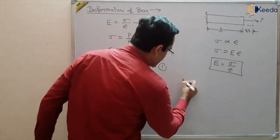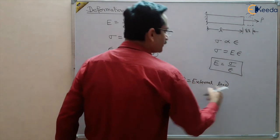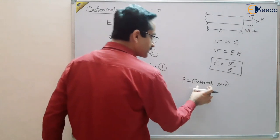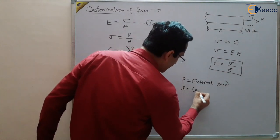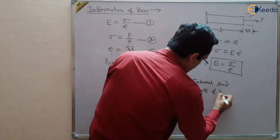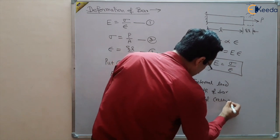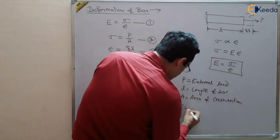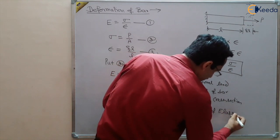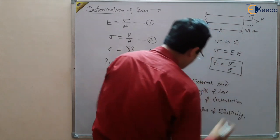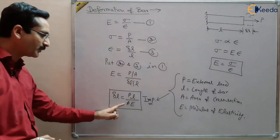In the formula delta L = PL / AE: P is the external load (also equal to internal load within elastic limit), L is the length of the bar, A is the area of cross section, and E is the Young's modulus of elasticity. You must remember this formula as it will be used directly in many numericals.